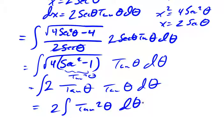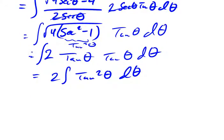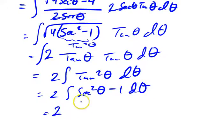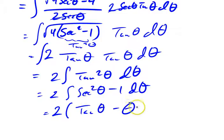I think this integral came up in an example in the last video. Anyway, I would change that into secant squared theta minus 1. So this is 2 times the integral of secant squared theta minus 1 d theta. The secant squared integrates to tangent theta, and the 1 integrates to theta, plus a constant.